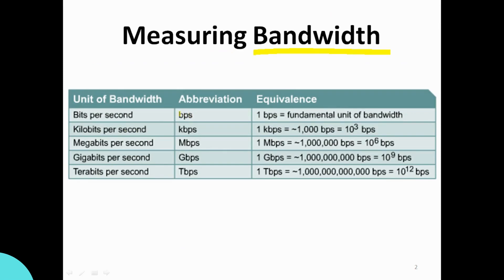Now, the unit of bandwidth is bps — bit per second. So 1 bit per second is the bandwidth unit.